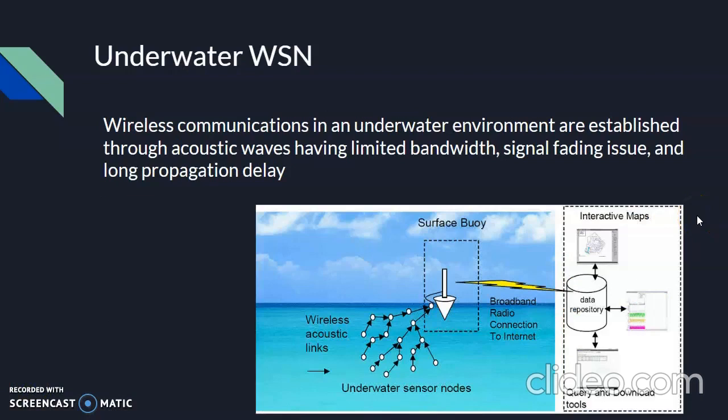Underwater WSNs: More than 70% of Earth is covered with water. These networks consist of several sensor nodes and vehicles deployed underwater. Autonomous underwater vehicles are used to gather data from the sensor nodes. The challenges of underwater communication include long propagation delay, limited bandwidth, and sensor failure. Underwater WSNs are equipped with limited batteries that cannot be recharged or replaced, requiring the development of underwater communication and networking techniques for energy conservation.